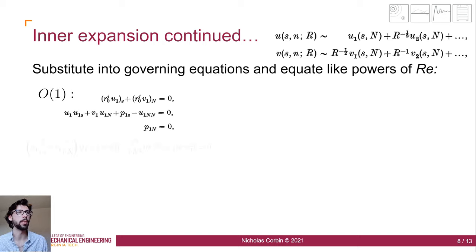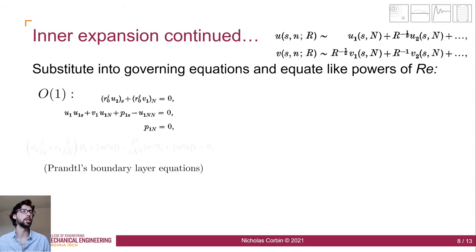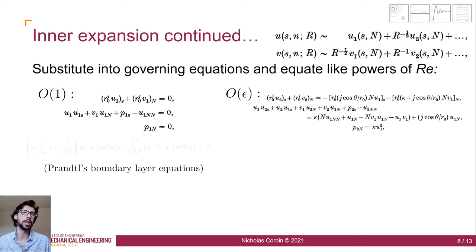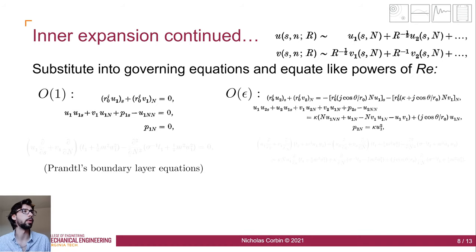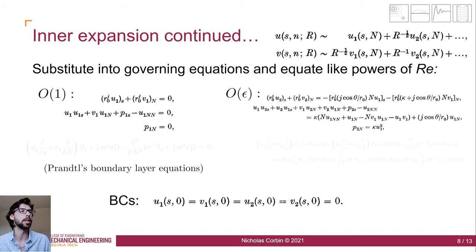The outer solution can only satisfy the upstream boundary conditions — it can't satisfy the no-slip boundary condition — whereas the inner solution can satisfy the no-slip boundary condition but cannot satisfy the outer flow conditions. Physically, we know that these two solutions have to agree at intermediate locations, so we develop a matching principle to provide the extra boundary conditions needed to solve both problems. The matching principle we have is only valid for large Reynolds number flows; for small Reynolds number flows, we have to deal with something more involved, but this is sufficient for the cases here.